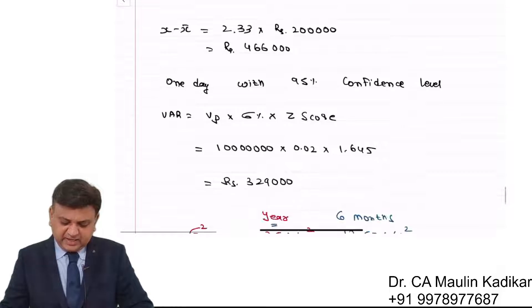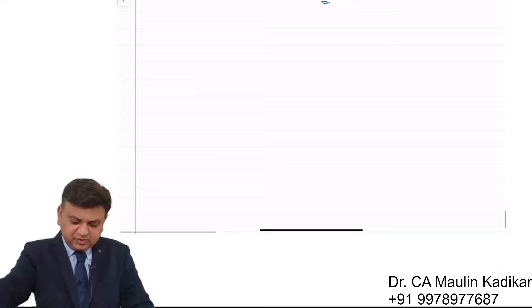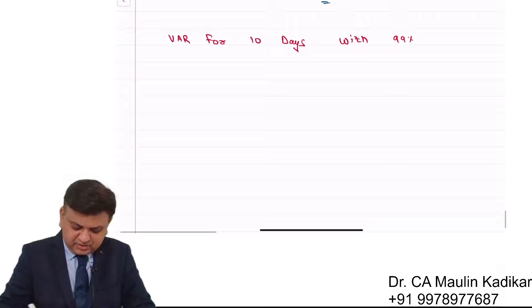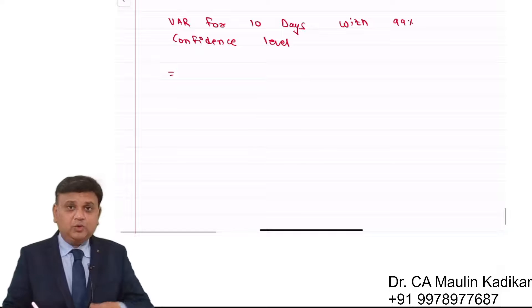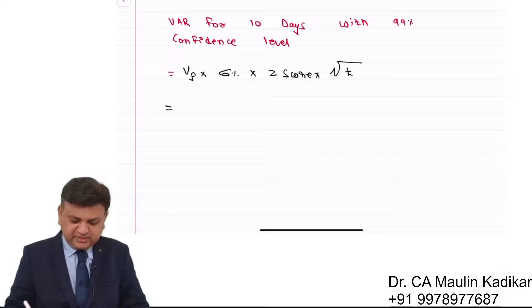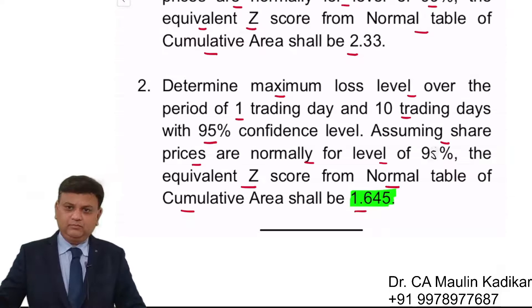Now friends, when we need to calculate VAR for 10 days with 99% confidence level, we do it this way: it is the value of the portfolio times standard deviation times Z score times the square root of the time period.